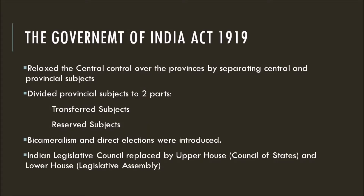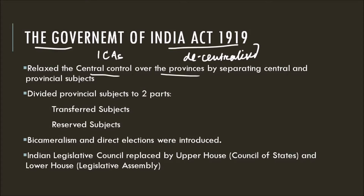So far, we have seen that the British failed to rule India in a centralized form. With the Indian Council Acts, they started decentralizing the power. In the Government of India Act 1919, they relaxed the central control over the provinces by separating central and provincial subjects. This means the central and provincial legislatures were now authorized to make laws on their respective list of subjects.